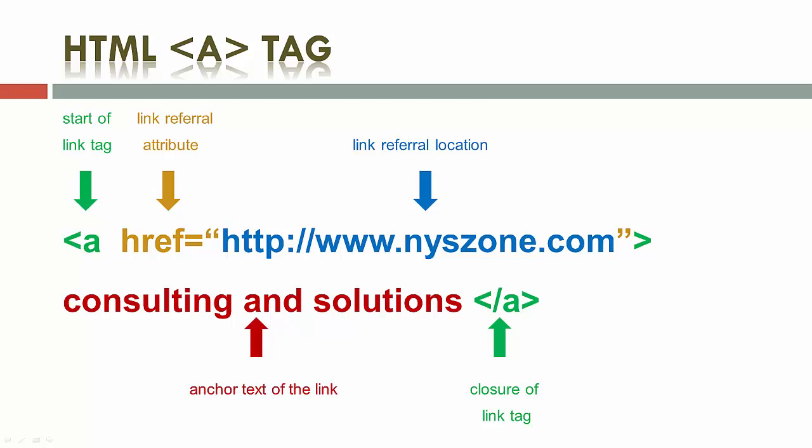In HTML5, the A tag defines hyperlinks to locations on the same page or other pages on the web. The href attribute is the most important attribute of the A tag. The href attribute specifies a URL or URL fragment that provides the destination of the hyperlink.